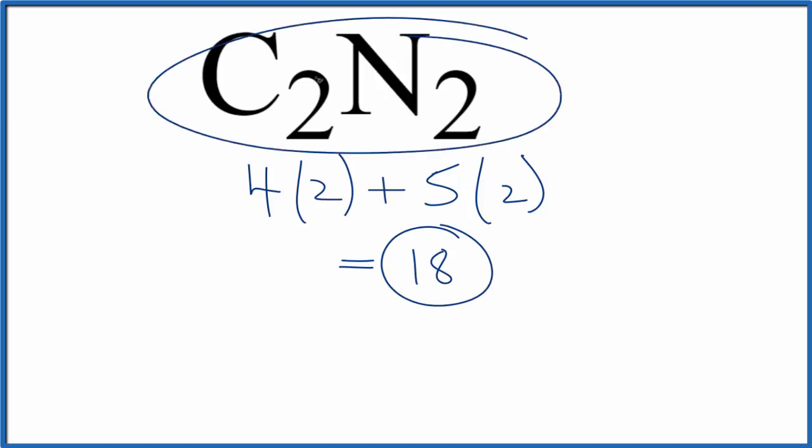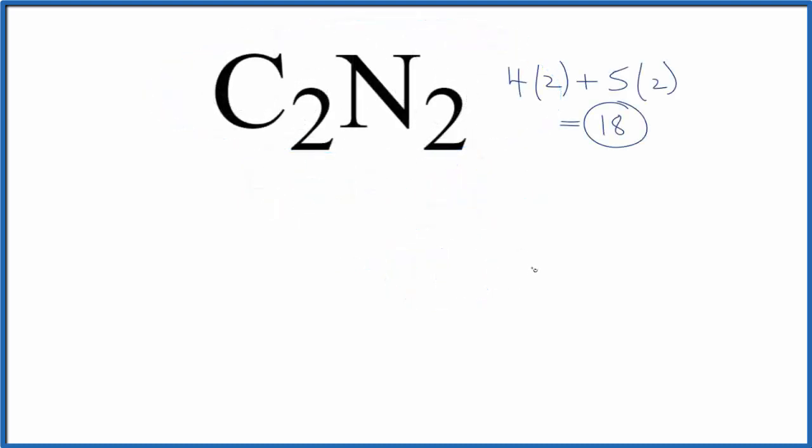This is also called cyanogen. We'll put the least electronegative element in the center. Here we have two carbons, we're going to put both of those in the center of our Lewis structure, and then we'll put a nitrogen on either end.